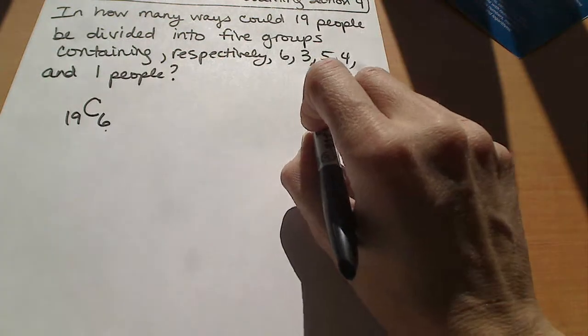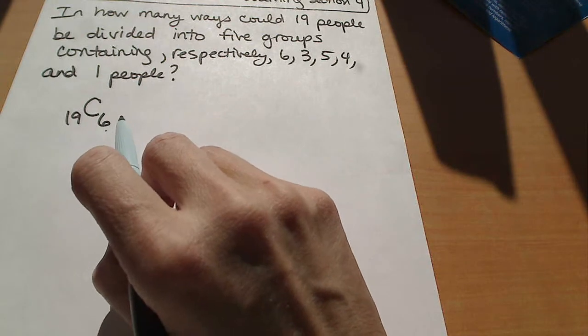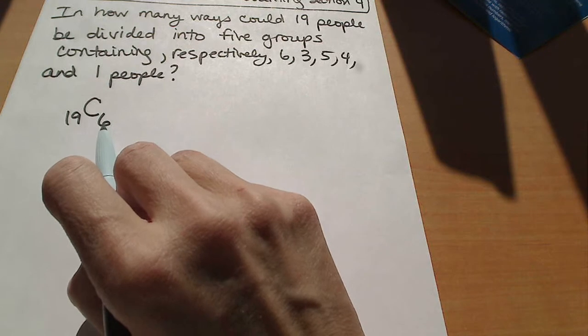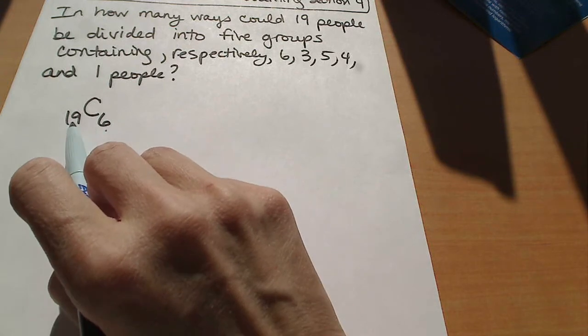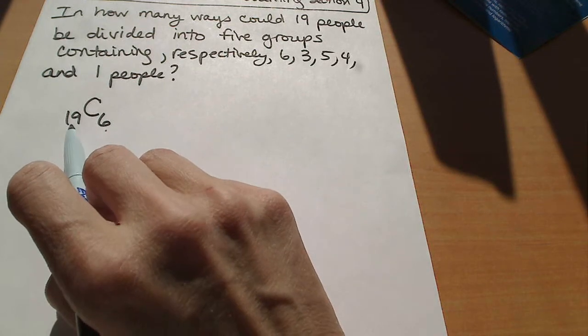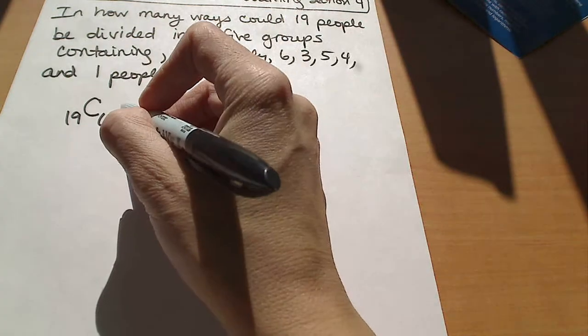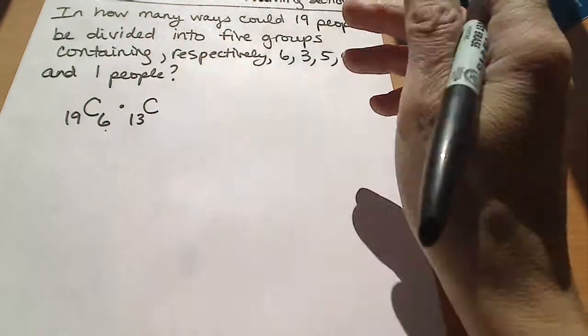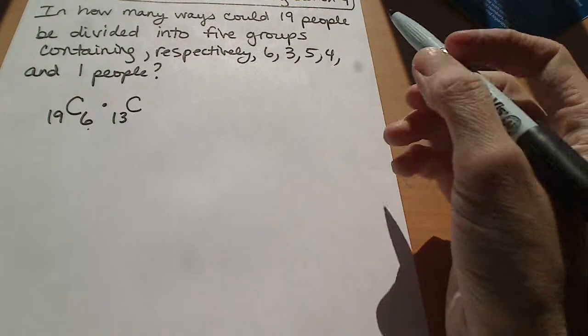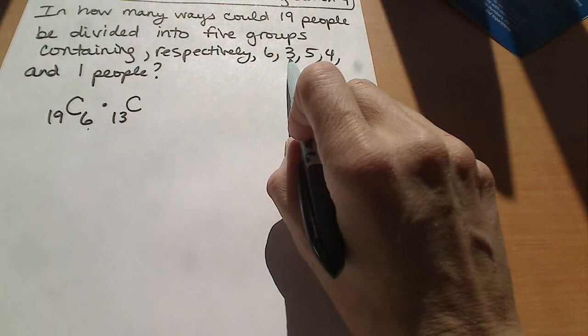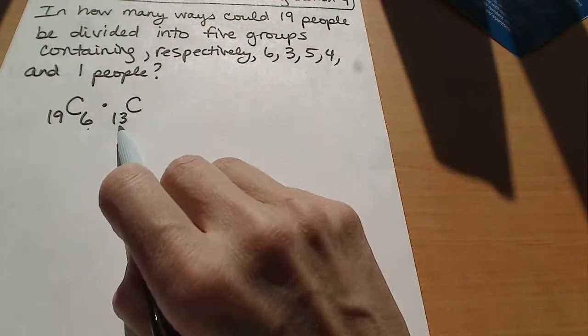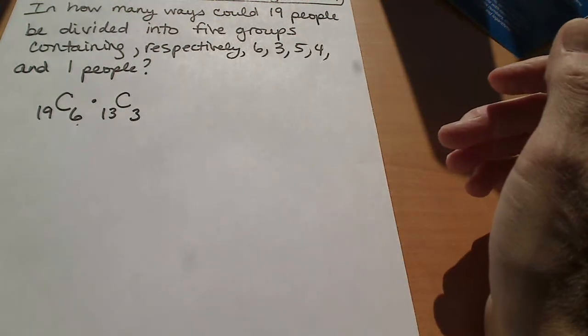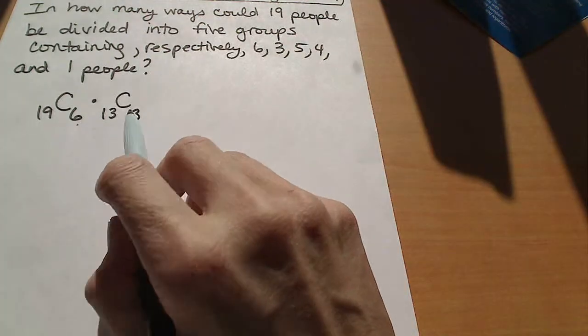And then what we're going to do to count the remainders is we have to think about how many people are remaining. So in this first grouping, we've already placed 6 people into a group, which means that we now have 13 people left. So when I go to count the next group, which has a grouping of 3, I only have 13 people to choose from. So to count the group of 3, I have a combination of 13 people that I'm now choosing 3 of them from. And then again, we're going to follow this pattern.